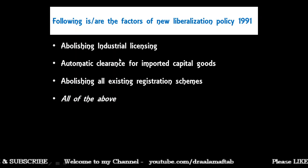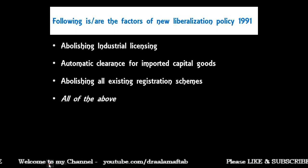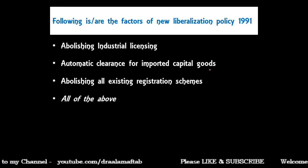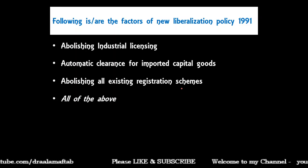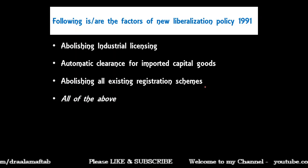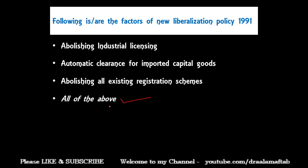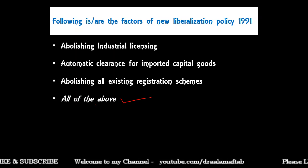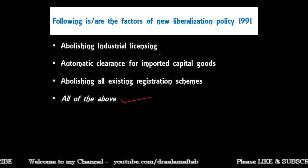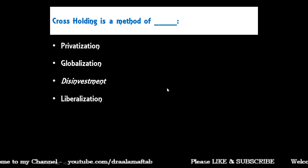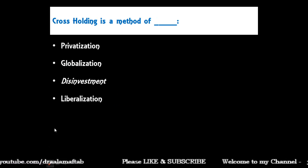Next question: following are the factors of the new liberalization policy of 1991 — abolition of industrial licensing, automatic clearance for imported capital goods, abolition of all existing registration schemes, or all of the above. The correct answer is all of the above. These are the factors of the new liberalization policy of 1991.